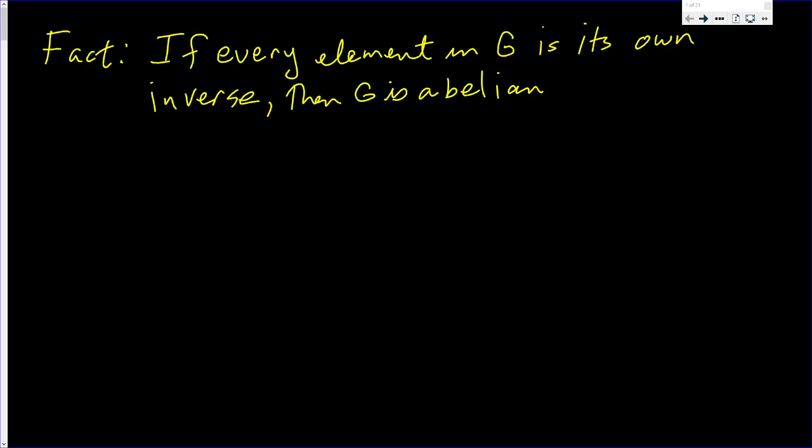This video is going to prove the following fact: If every element in G is its own inverse, then G is abelian. It doesn't even say that G is finite or anything. If you like watching mathematical truths, consider subscribing to my channel because that's what we do here all the time.